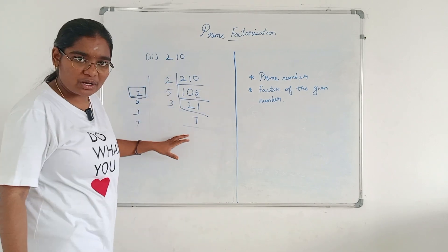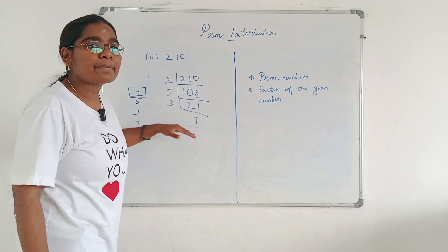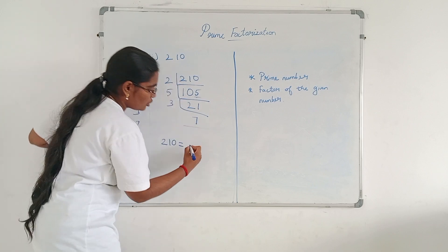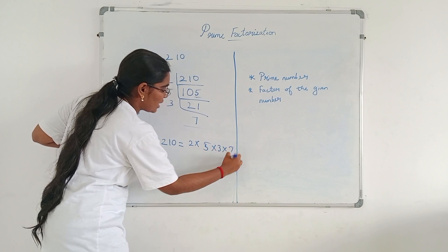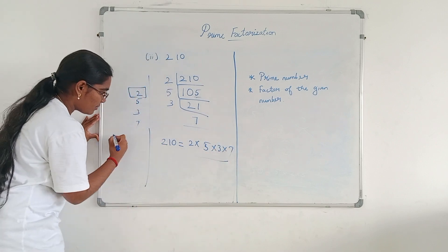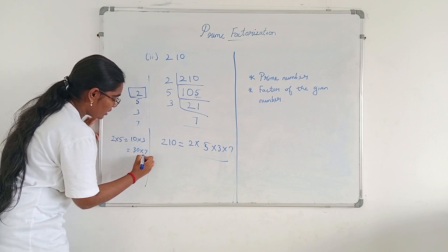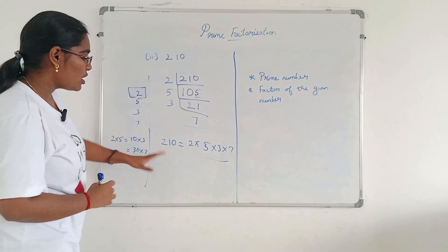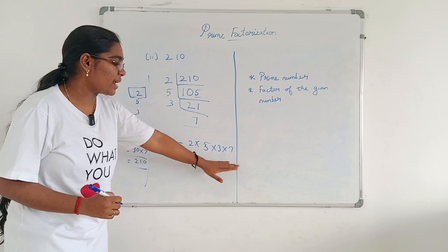We can stop this process because 7 is a prime number. So 210 equals 2 into 5 into 3 into 7. Verify: 2 into 5 is 10, 10 into 3 is 30, 30 into 7 is 210. We have written this composite number in terms of its prime factors.